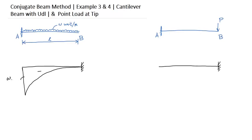And this value will be WL squared by 2EI. And for the point load case, it will be linear, negative, it will be just PL by EI.